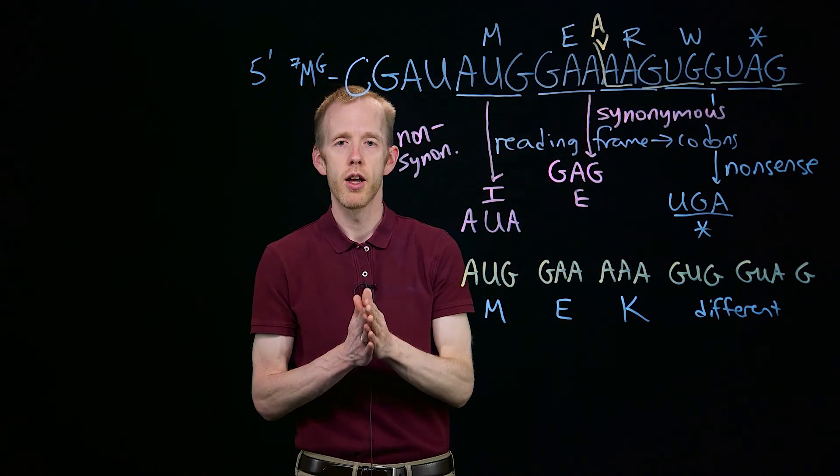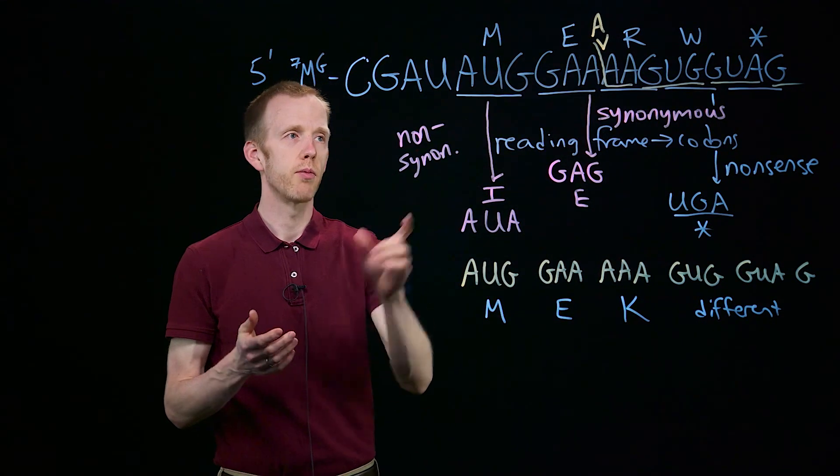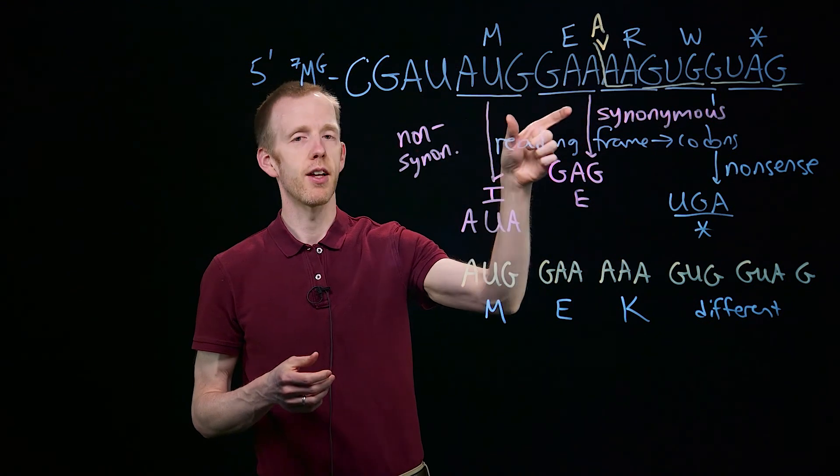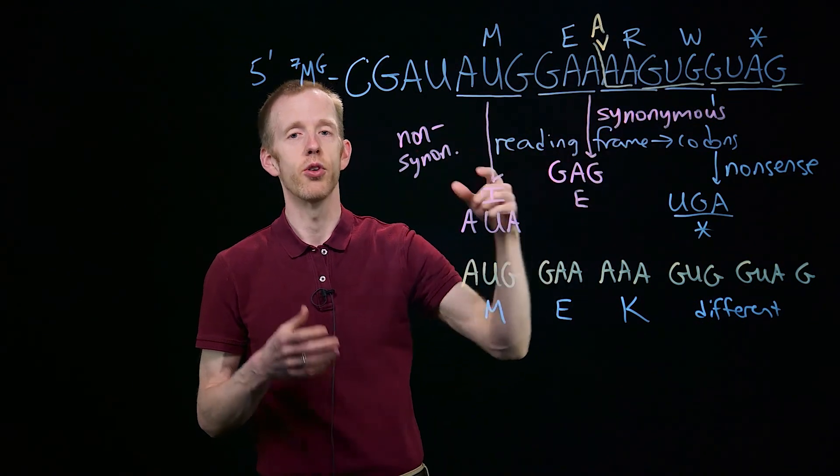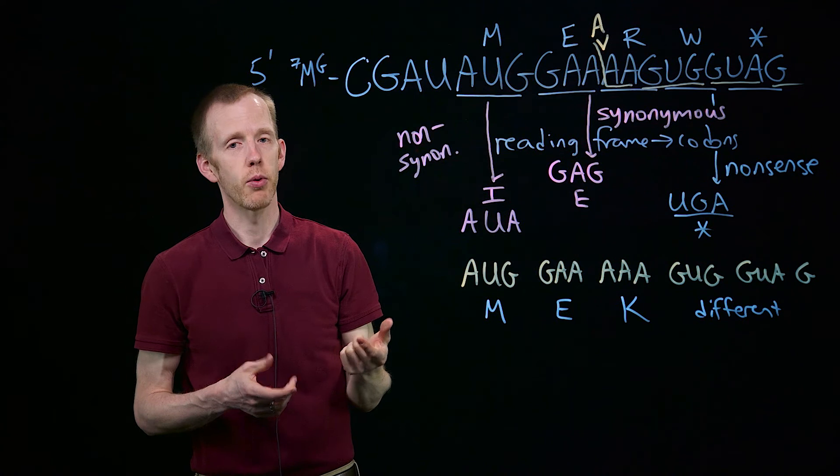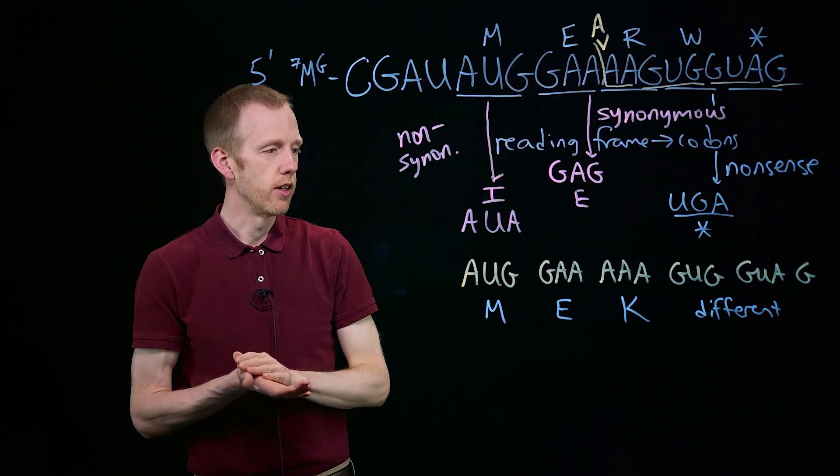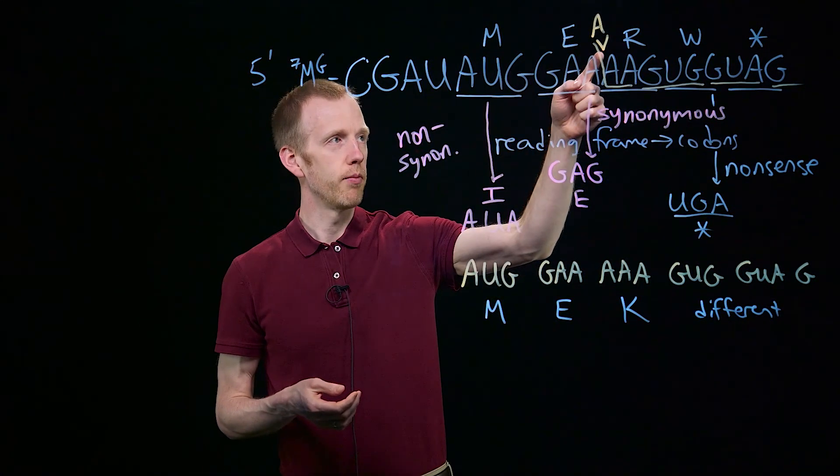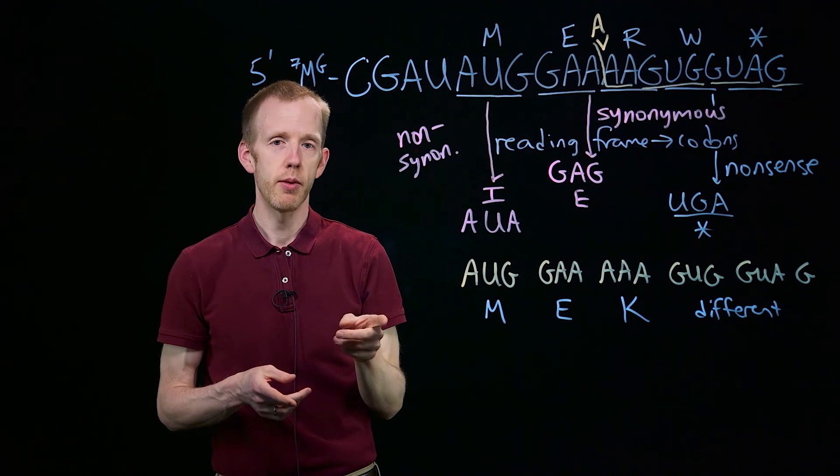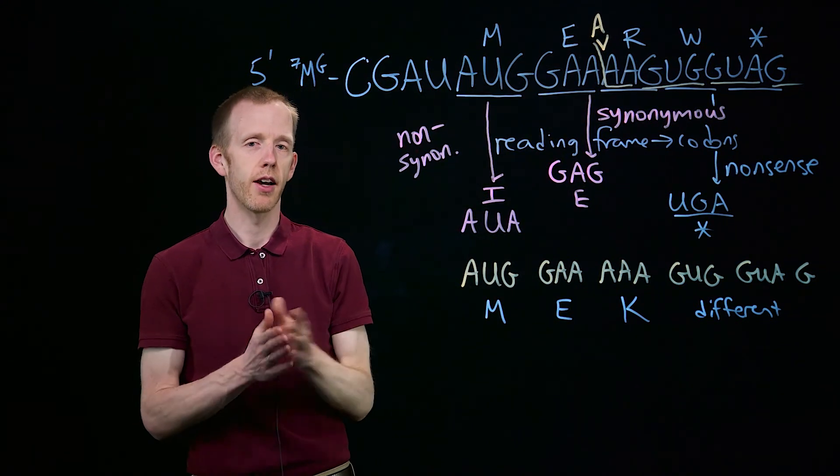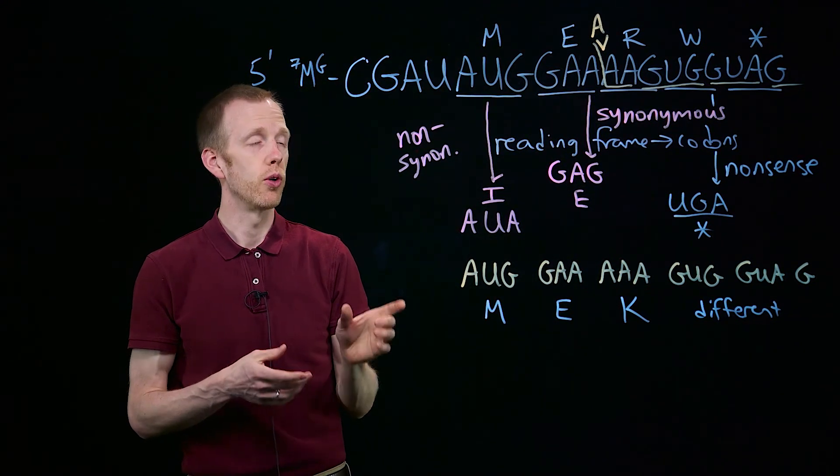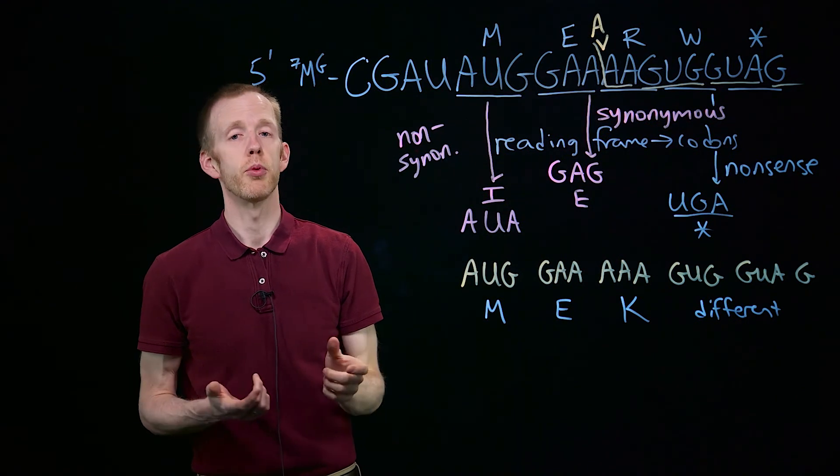So a frameshifting mutation, to summarize, is one that makes the ribosome read sets of three nucleotides, or codons, that are different than it did originally, without the mutation. If you insert one nucleotide, that usually causes a frameshift. If you insert two nucleotides, that causes a frameshift. But if you insert or delete three, or multiples of three, then that erases an entire codon.